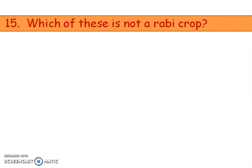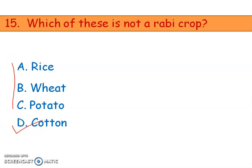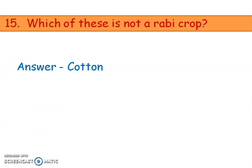Next question: which of these is not a rabi crop? Options are rice, wheat, potato, and cotton. Rice, wheat, and potato are rabi crops. The right answer is cotton, as cotton is not a rabi crop.